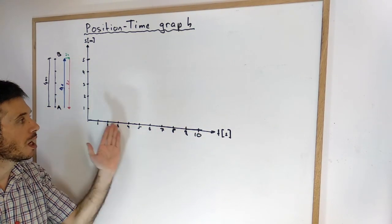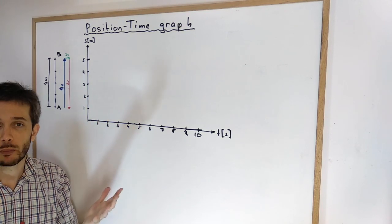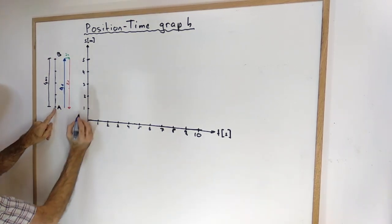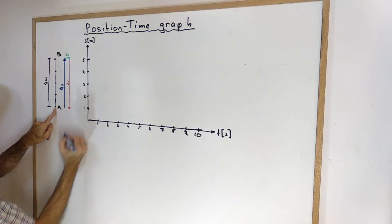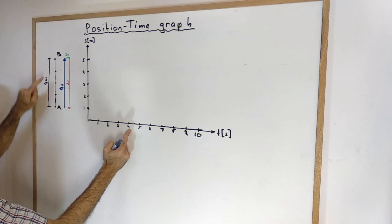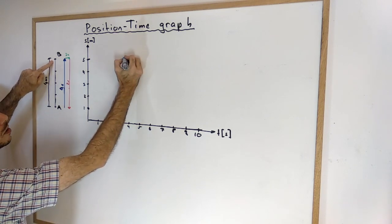So for any moment in time, we're going to plot where the object was. For example, if I have an object that starts at position A and takes 4 seconds to go to position B, I can plot this here. At time equals 0, I was at position A, which is here, and 4 seconds later, 1, 2, 3, 4 seconds later, I was at position B, so I was here.